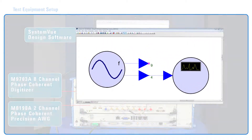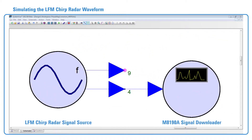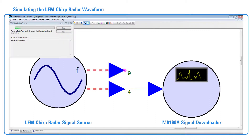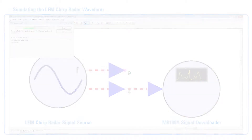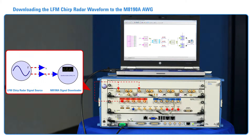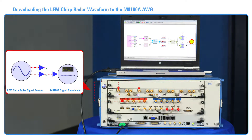An LFM Chirped Radar signal source is connected to the M8190A signal downloader in SystemVue. Starting the simulation downloads the signal to the M8190A AWG. An external RF power splitter is used to split the AWG output into two of the eight input channels of the M9703A Digitizer.